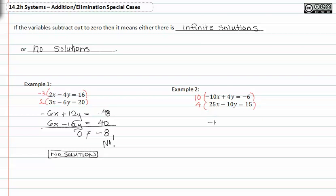This would give me negative one hundred x plus forty y is equal to negative sixty in my first equation. And when I distribute four through, I would get positive one hundred x and negative forty y, and that's equal to sixty.